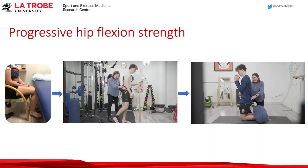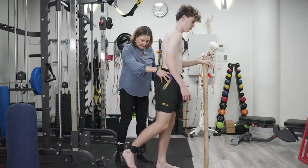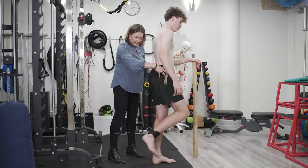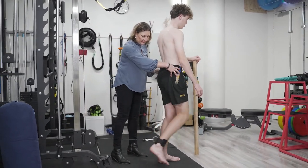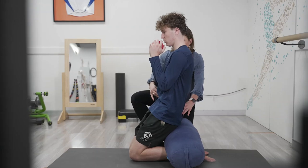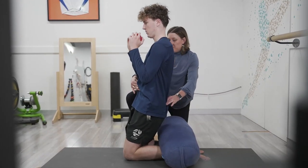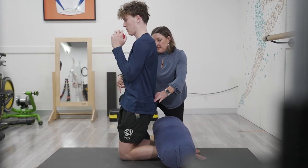If you're looking at an iliopsoas-related groin pain, the same principle applies — starting with the isometrics knee under the desk, moving to the isotonics with something like a cable, and then eventually using the reverse nordics to get the eccentric hip flexion activity. It's really important not to miss out that final step. If we don't perform that final eccentric training, it's really common, particularly in a kicking-based sport, to get recurrence in our hip flexor tendon problems.